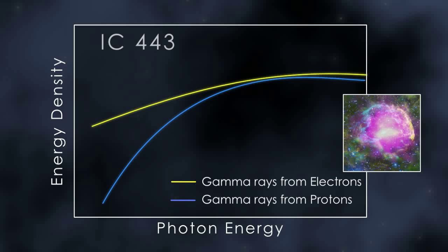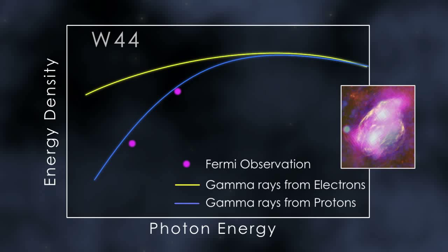Now, Fermi observations have done just that. They conclusively show these supernova remnants are accelerating protons. When they strike protons in nearby molecular clouds, they produce pions, and ultimately, the gamma ray emission Fermi sees.